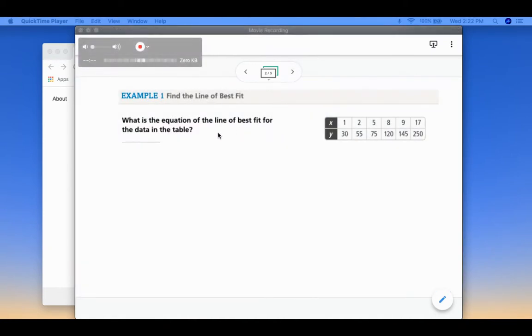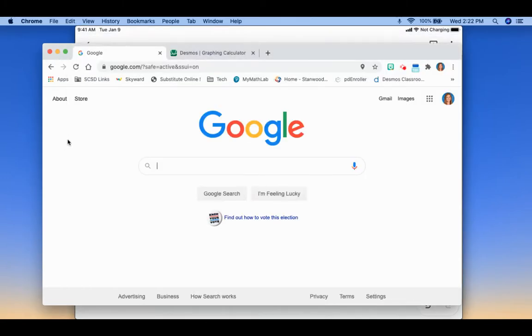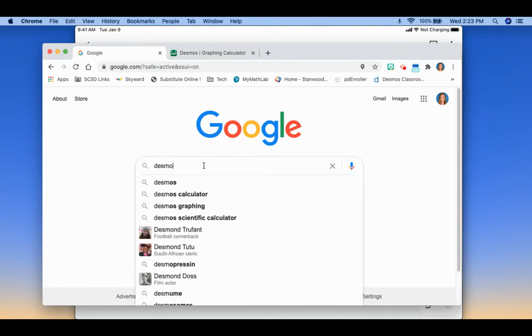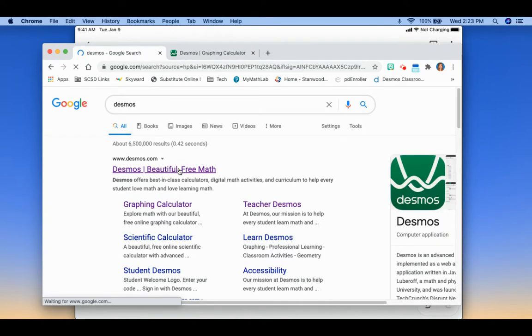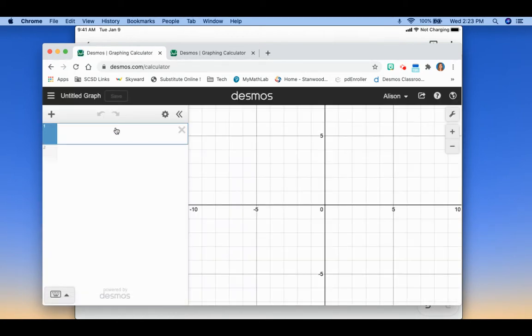So our first example says what is the equation of a line of best fit for the data in the table? So when you have a set of data and you want to find the line of fit for it we can use what's called linear regression. Okay, so what I'm going to do is I am going to go to Desmos. So I'm going to type into my search Desmos. We're going to go here, we're going to hit graphing calculator. And so the first thing that you're going to do is we want to be able to enter our table of values in here. So we're going to type the word table and you'll notice a table appears.